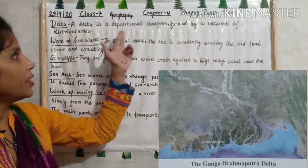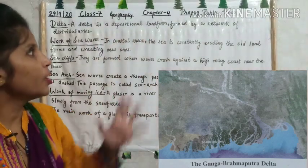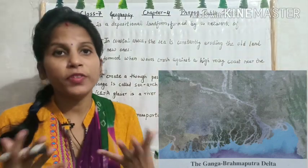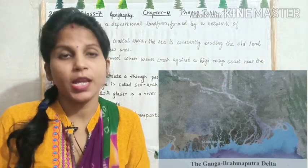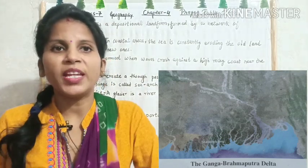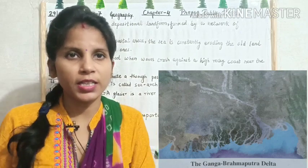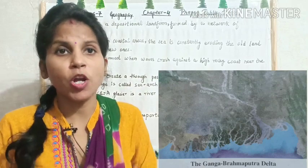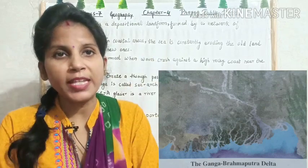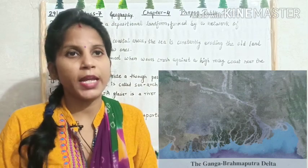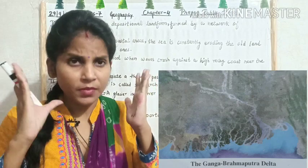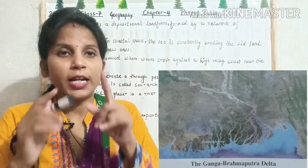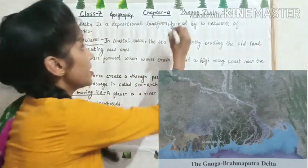What is a delta? A delta is a depositional landform formed by a network of distributaries. When a river flows, it goes through many channels — it splits into different channels as it moves forward — and carries sediments and eroded rock material, depositing them on the plains. The deposited material collected at the mouth of the river is called a delta.